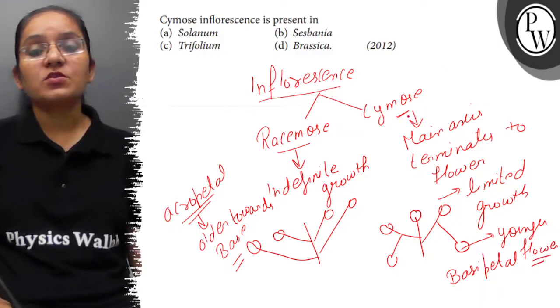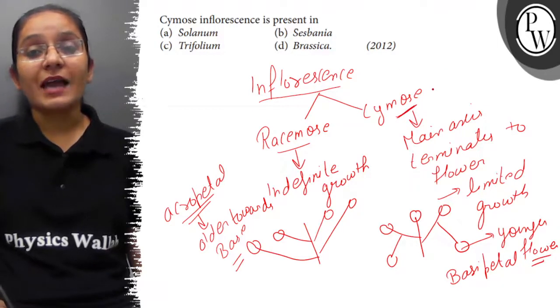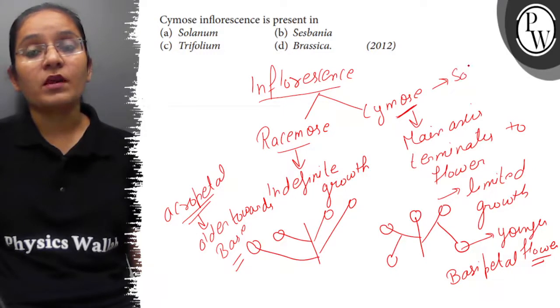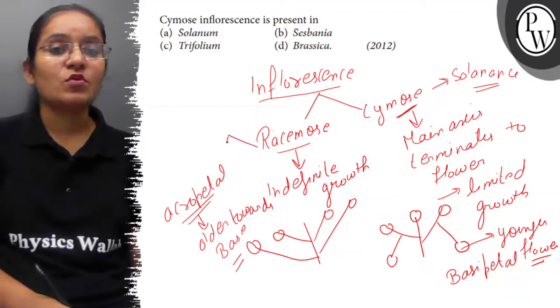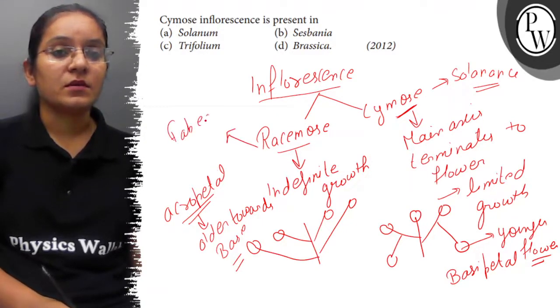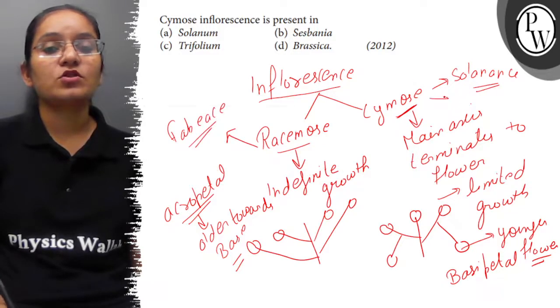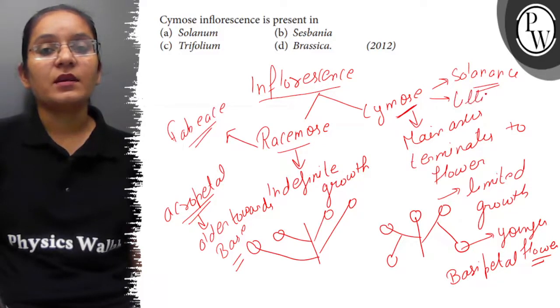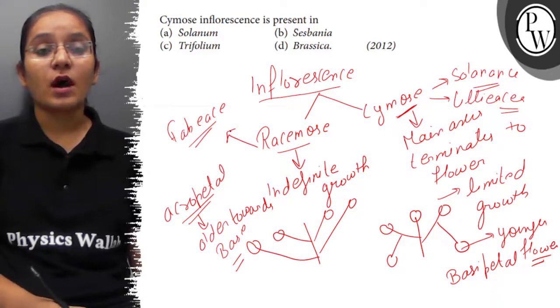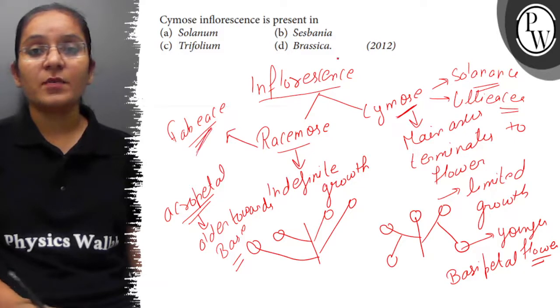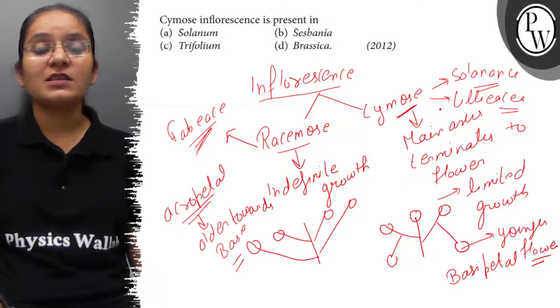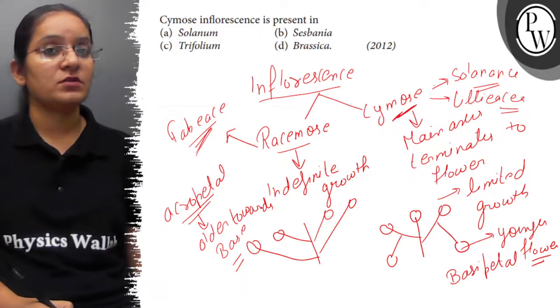Now, let's see the options. Cymose type of inflorescence is found in plants with solanaceae family, while racemose type of inflorescence is found in fabaceae. And liliaceae family also shows cymose type of inflorescence. So, now we have to identify which are solanaceae and liliaceae family.